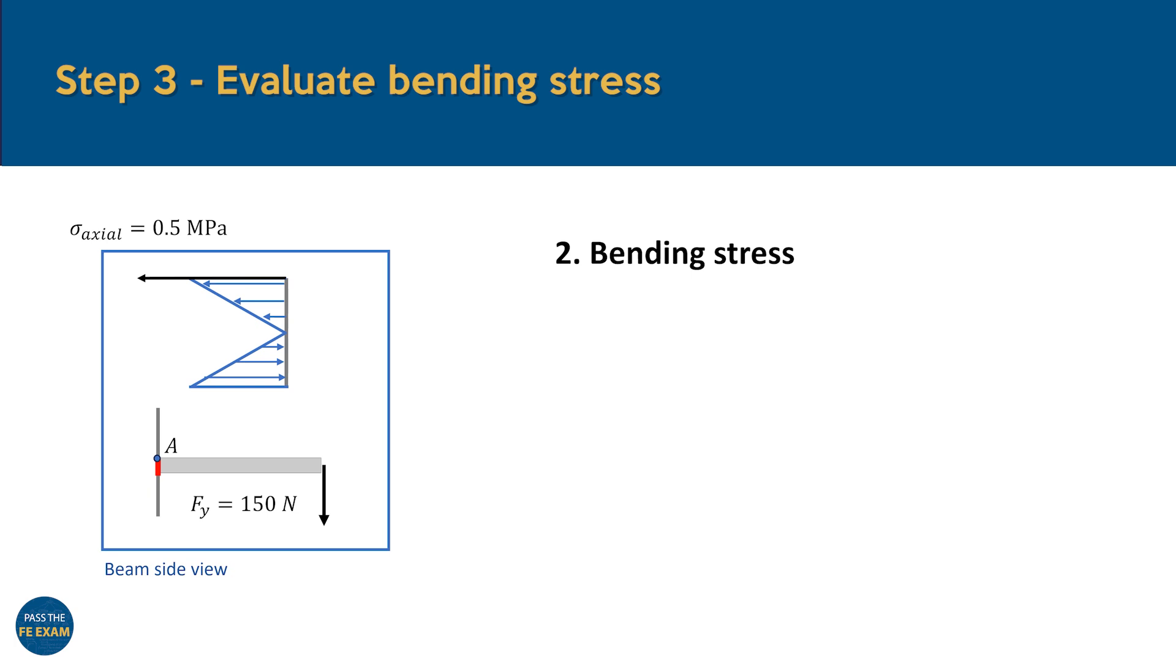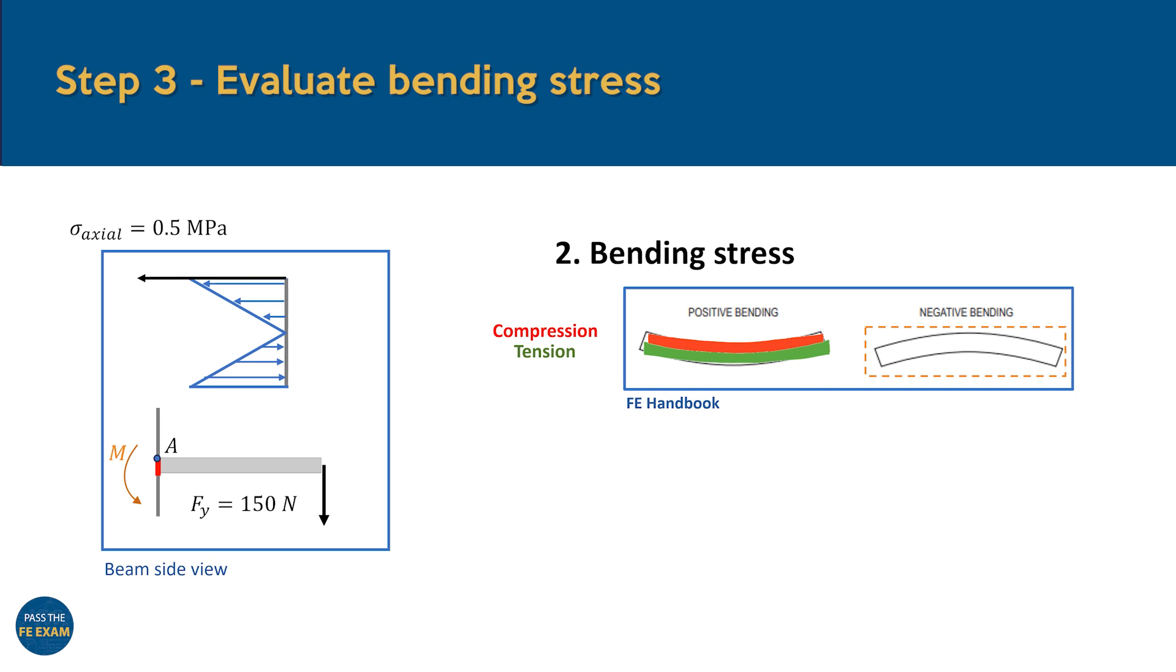Let's get a clearer picture of bending stress by looking at the beam from the side. When the force Fy is applied, the beam responds with an equal but opposite reaction force at the fixed end, which could induce shear stress. However, as we already know, shear stress doesn't contribute to the stress at point A, so we can set that aside for now. What's important here is that the force also creates a reaction moment at the fixed end, M, which is responsible for the bending stress in our section. Now, according to the FE handbook, we can classify bending as either positive or negative. A positive bending moment curves the beam upward with the top fibers in compression and the bottom in tension. But in our case, the reaction moment bends the beam downward, meaning we're dealing with negative bending. This gives us a useful framework for how these stresses behave in this scenario.